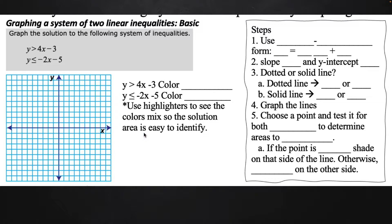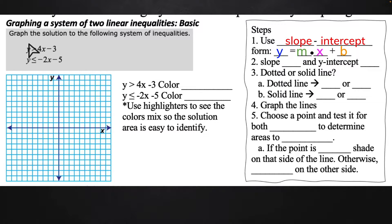With these ones, we're going to graph the two inequalities, and then we're going to shade both of them, and where the two shading overlap, that is the solution area that we want to use. We're going to use slope-intercept form because they're actually already in that form for us. I know it's not an equal sign, but we can still use the same idea behind slope-intercept form to graph the lines. Then we can worry about solid or dotted lines in just a moment.